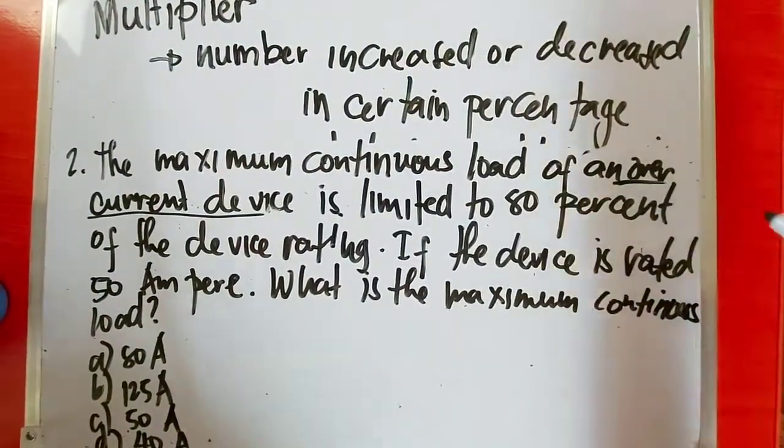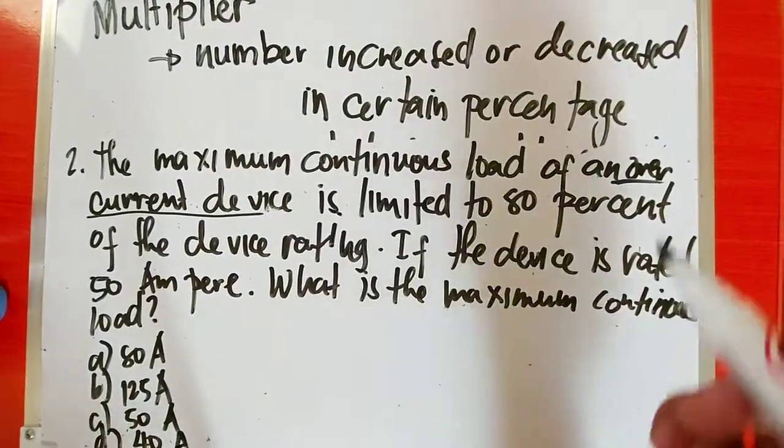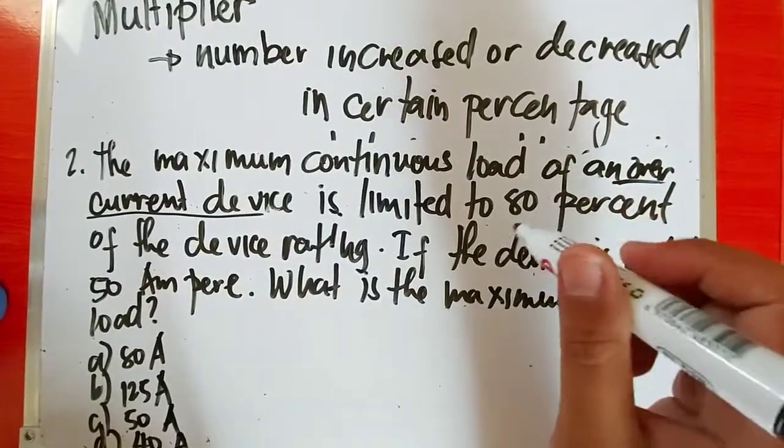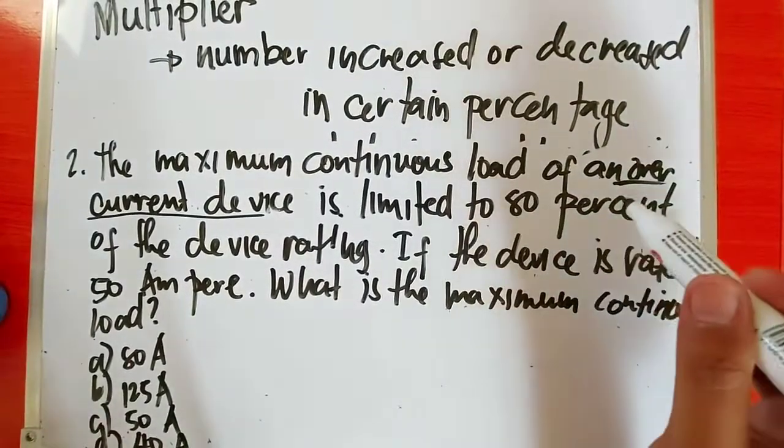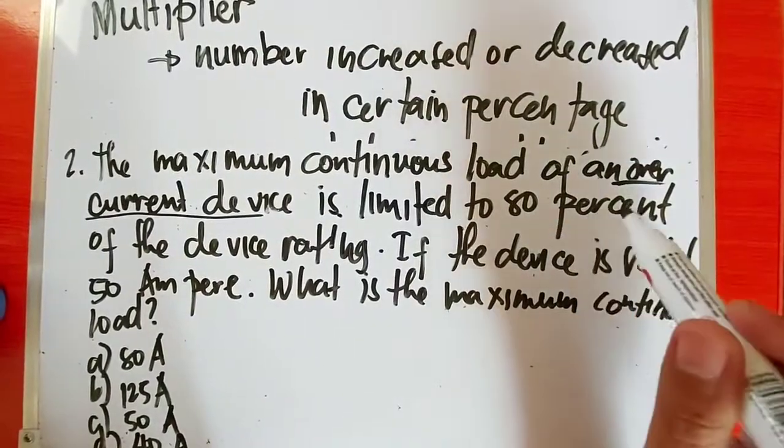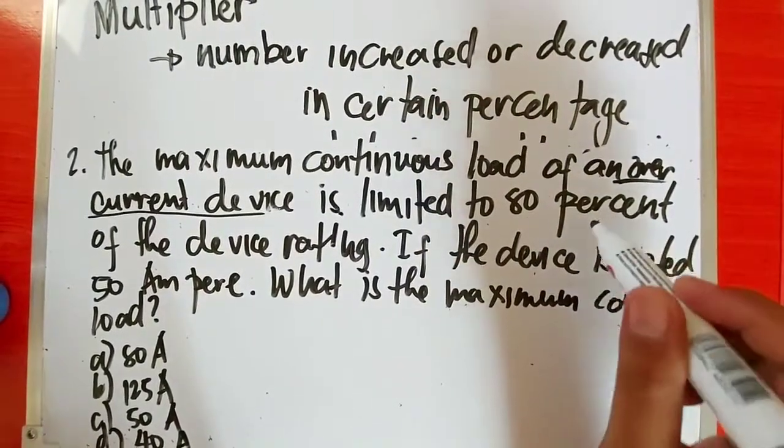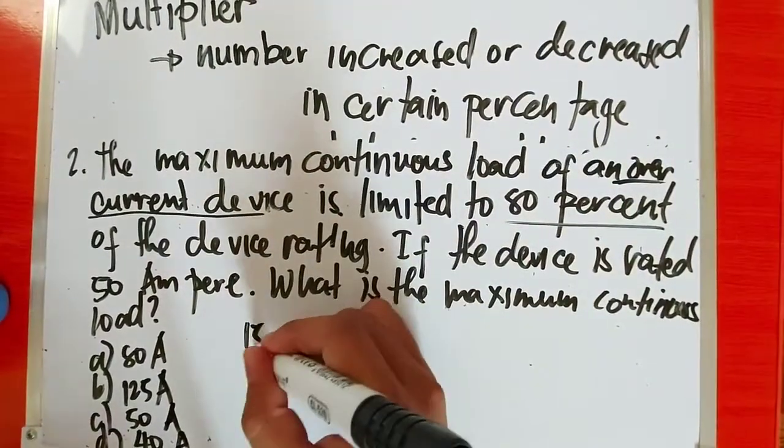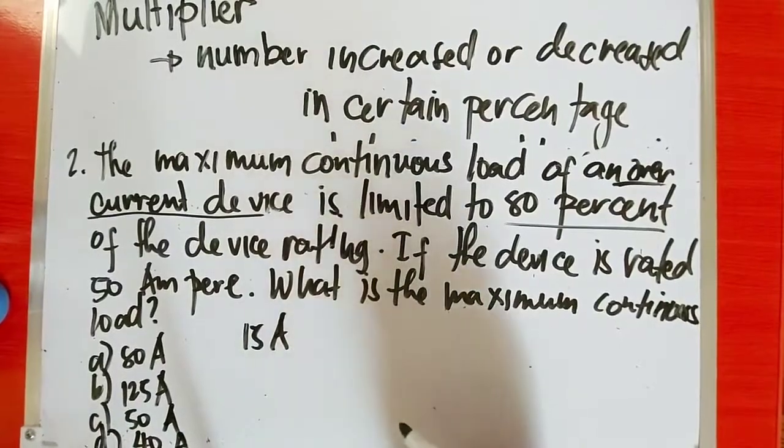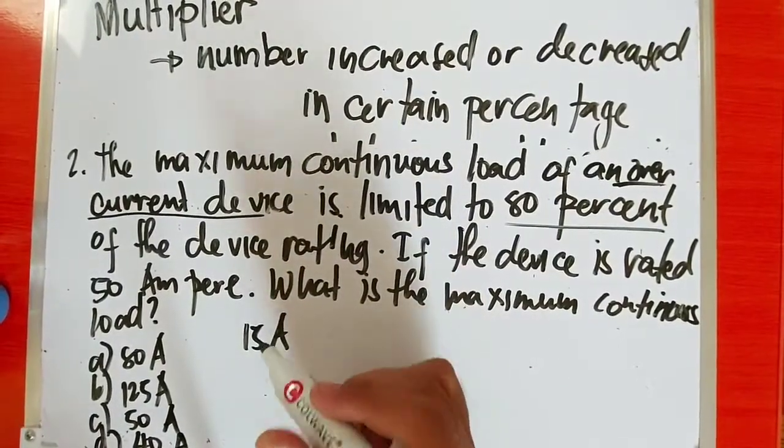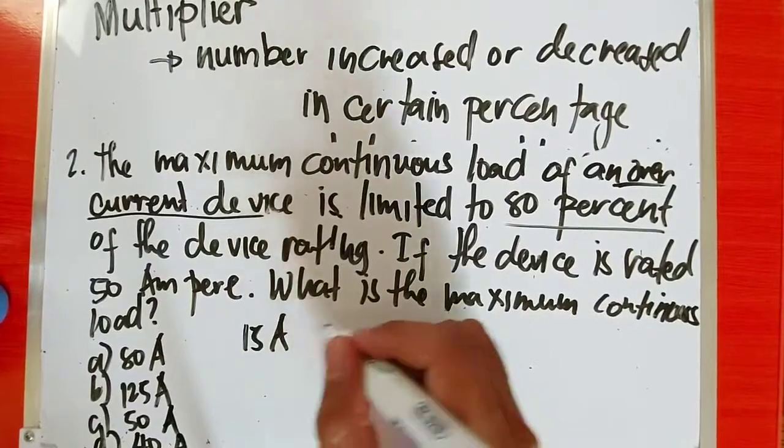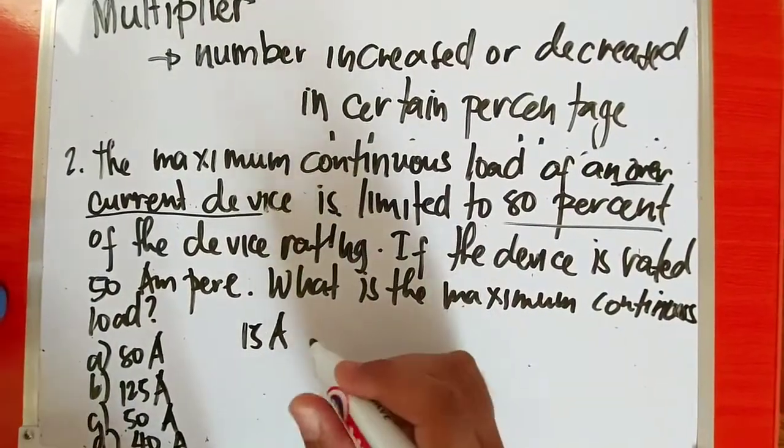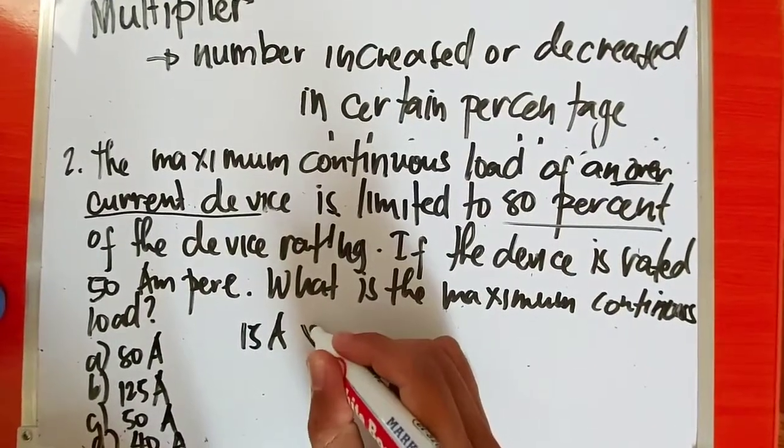The maximum continuous load of an overcurrent device is limited to 80%. So overcurrent device - what is that again? This is the fuse or circuit breaker. It's limited to only 80 percent, so it's derated. It's always like that. The overcurrent protective device is derated because you can't use it at 100% full capacity. It needs to be only 80 percent. For example, if I have a 15 ampere breaker, you can't use all 15 amperes. If you connect lights, you can't maximize the 15 amperes. You need to derate it by 80 percent.